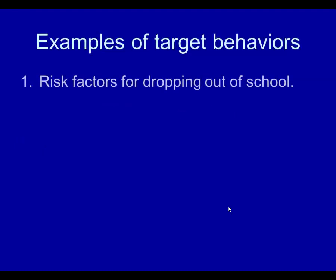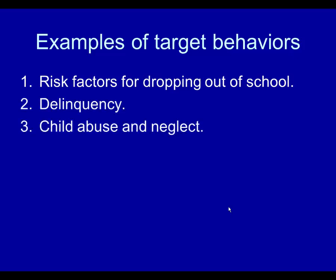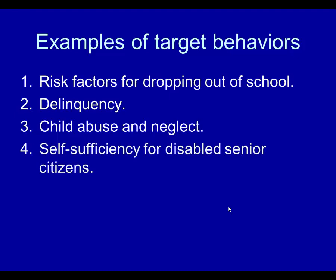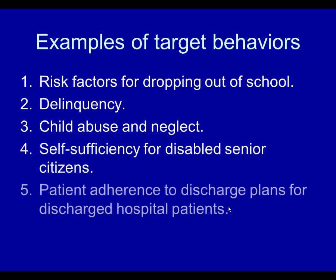Examples: risk factors for dropping out of school — what makes you vulnerable to that — delinquency, child abuse and neglect, self-sufficiency for disabled senior citizens, patient adherence to discharge plans for hospital patients. Or even better, premature re-hospitalization would actually be a better example than that.